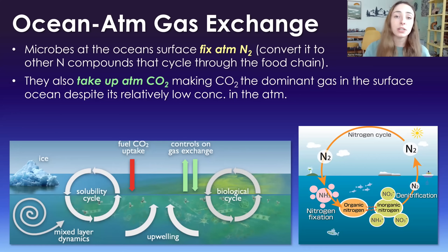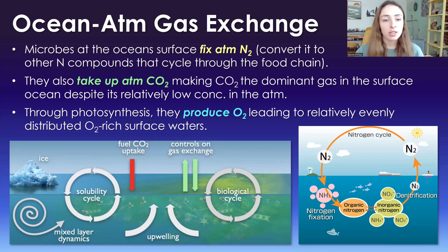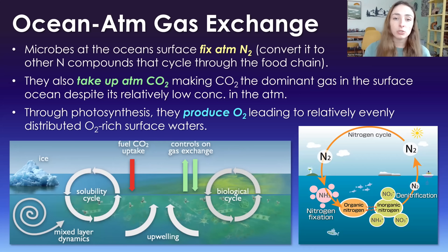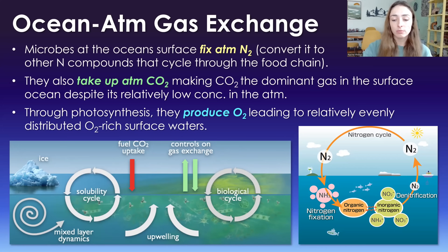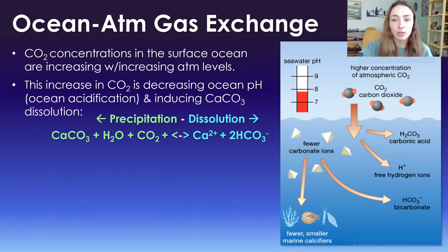CO₂ concentration varies spatially, being more concentrated where primary productivity is higher. Through photosynthesis, algae produce oxygen, leading to relatively evenly distributed oxygen-rich surface waters. However, ocean-atmosphere gas exchange is causing CO₂ concentrations in the ocean to increase as atmospheric CO₂ rises. This is changing the ocean's pH — causing what is called ocean acidification.